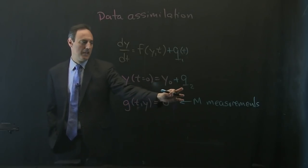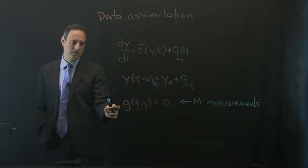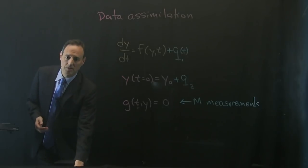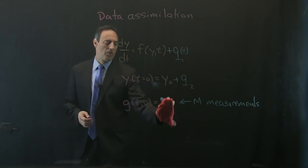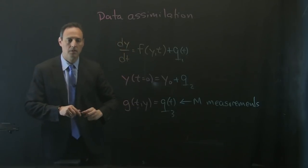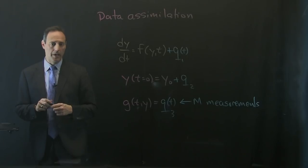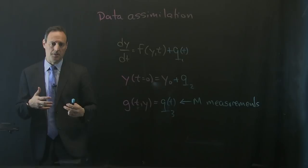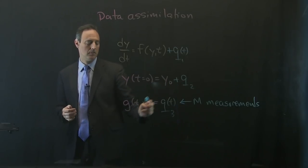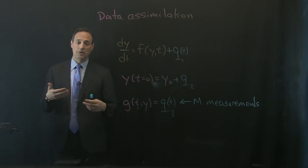You also have a real measurement of the system, which is in some sense model-agnostic - it just measures y with sensors. But even your sensors have noise, so your measurement has noise constraints on it. This sets up the framework: a model with unknown physics, an initial condition known only to a certain level, and imperfect measurements. We don't know Q1, Q2, or Q3.